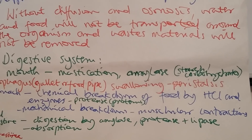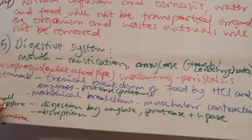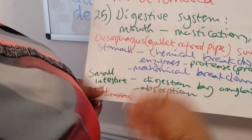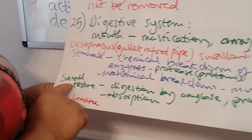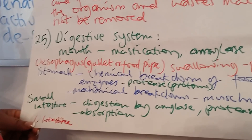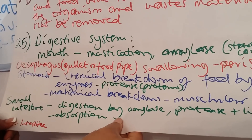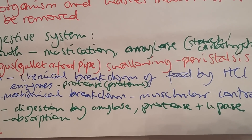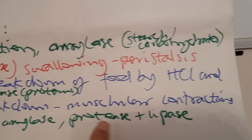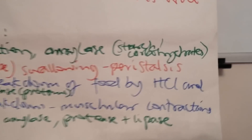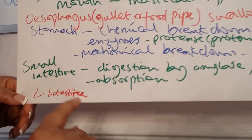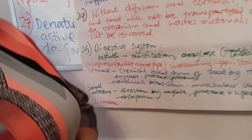In the stomach there is chemical breakdown of food by hydrochloric acid, and protease specifically breaks down proteins into amino acids. There is also mechanical breakdown by the muscular contractions of the stomach. The stomach stores food for about three to four hours while it is broken down. In the small intestine, finger-like projections called villi create a large surface area for digestion and absorption. Amylase breaks starch into glucose, protease breaks proteins into amino acids, and lipase breaks down fats and oils into fatty acids and glycerol.